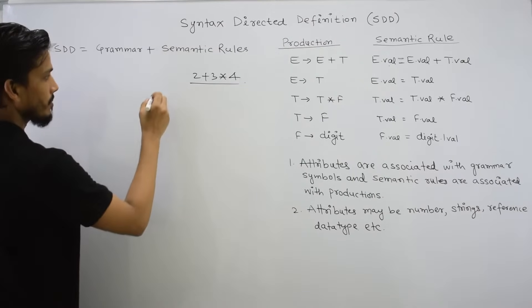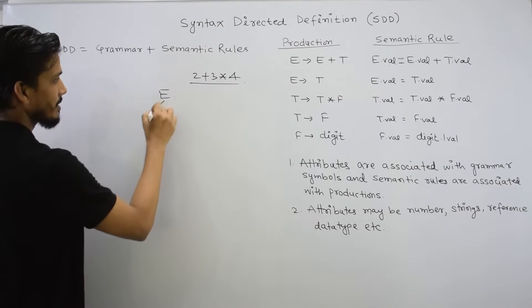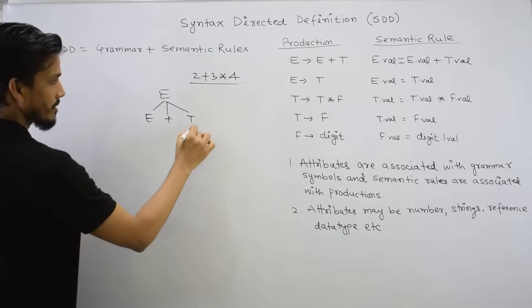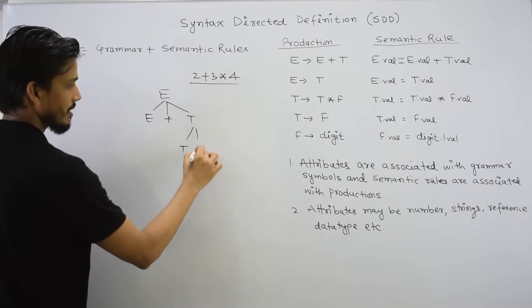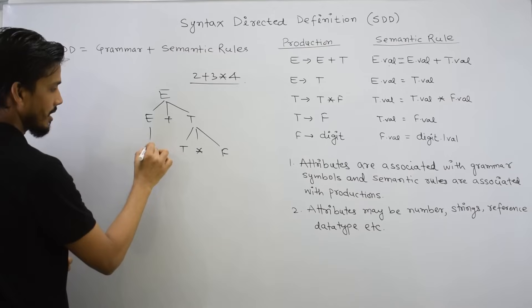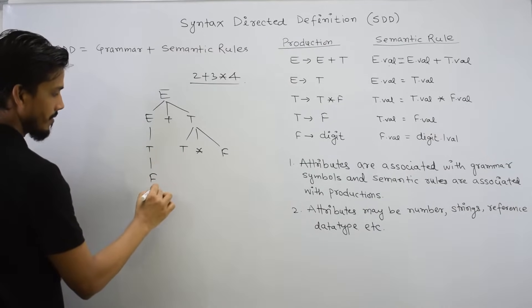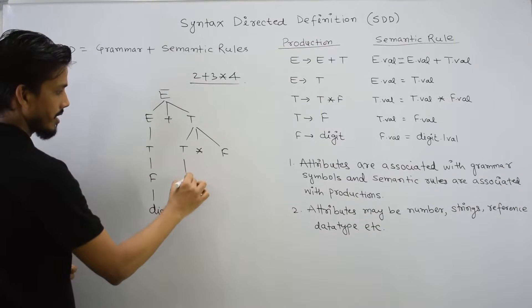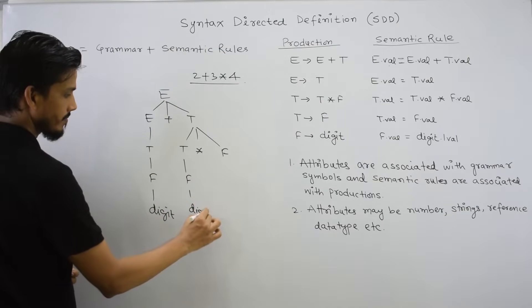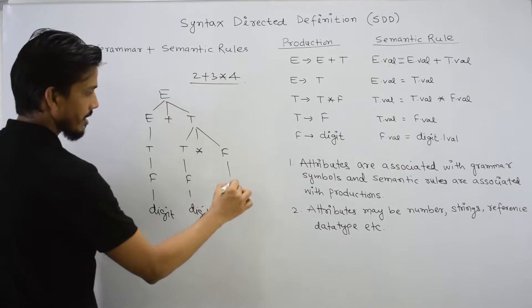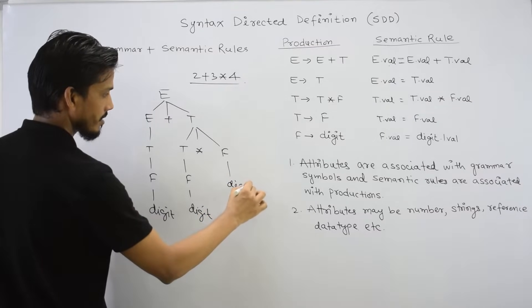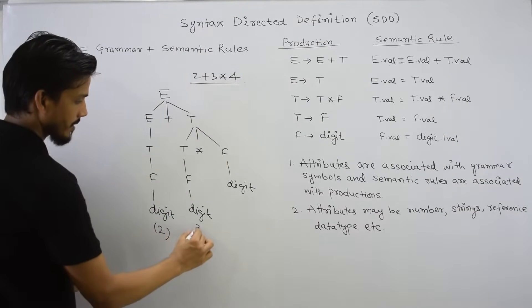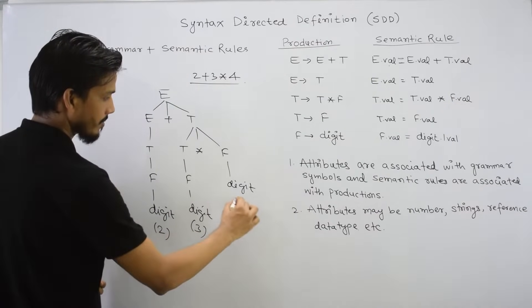If we generate a parse tree, E derives E plus T, because plus is first. Then T derives T star F. And F derives digit. E derives T, T derives F, and F derives digit. We assume this is 2, this value is 3, and this is 4.